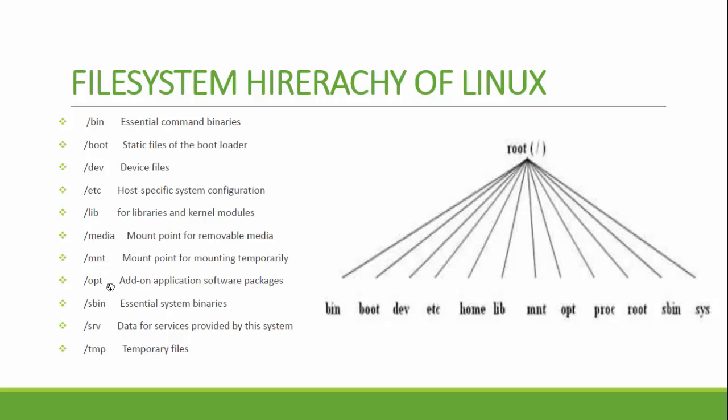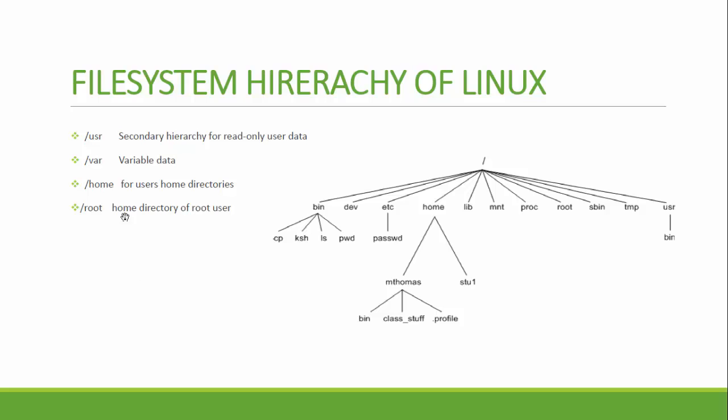Slash srv is for services, slash tmp is for temporary files, slash home is for users' home directories, and slash var is for variable data — for example, slash var slash log contains log files, and slash var slash spool slash mail contains printer spool files. This variable data is stored under slash var. This is the file system hierarchy — let's now see this in a graphical manner.